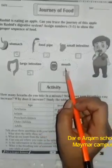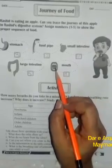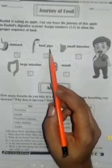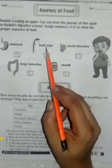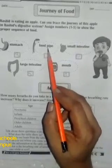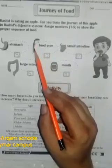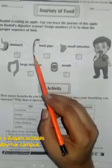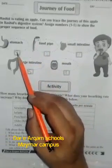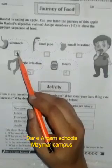After passing from the mouth, when Rashid swallows these apple pieces, they will come into the food pipe. So mark number 2 to the food pipe. And after passing from the food pipe, this apple comes into the stomach. Mark number 3 to the stomach.